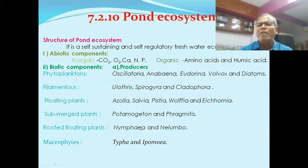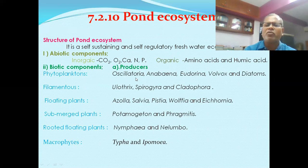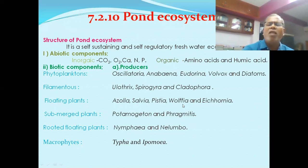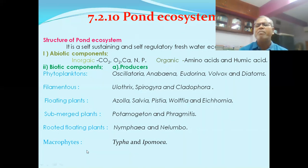The biotic components include producers, consumers, and decomposers. Producers in the pond ecosystem include phytoplanktons, filamentous algae, floating plants, submerged plants, rooted floating plants, and macrophytes. Examples of phytoplanktons: Anabaena, Euglena, Volvox, and diatoms. Filamentous algae: Ulothrix, Spirogyra, Cladophora. Free floating plants: Azolla, Salvinia, Pistia, Wolffia, and Eichhornia (water hyacinth). Submerged hydrophytes: Potamogeton.